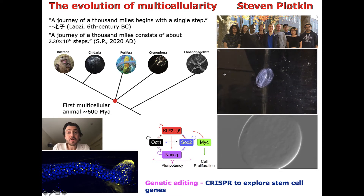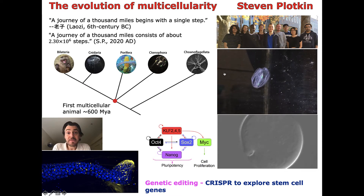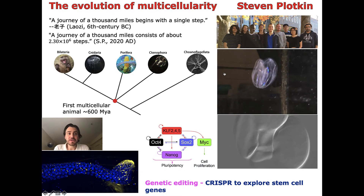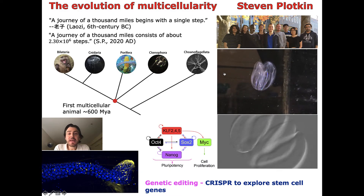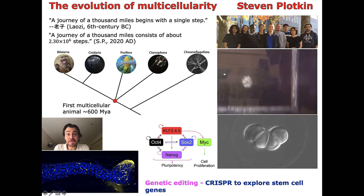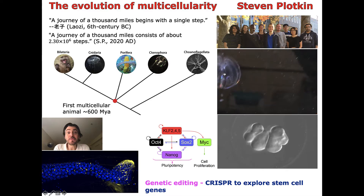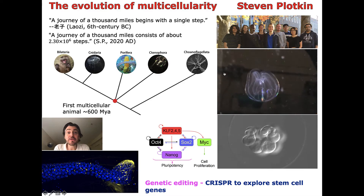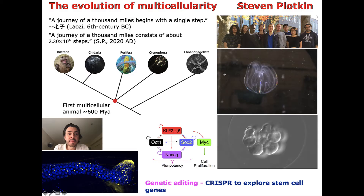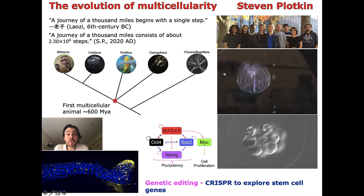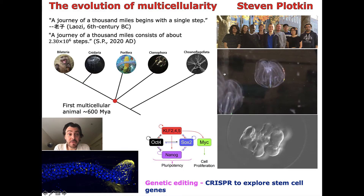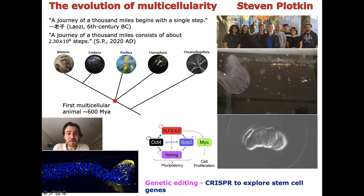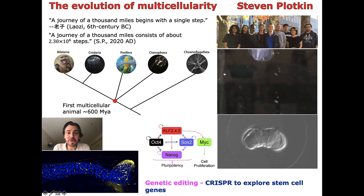Hi. For those who don't know me, I'm Stephen Plotkin. I'm a biophysicist here in the department at UBC. You might ask why a physicist like myself would study such a biological question as the evolution of multicellularity. Well, along with my group, shown here in the upper right, I've undertaken this journey of a thousand miles starting around 2017.